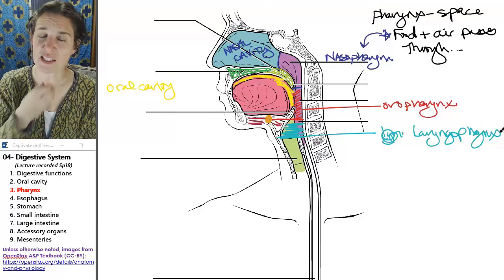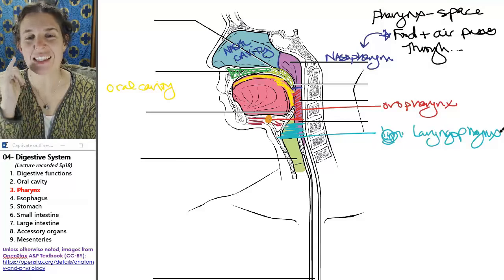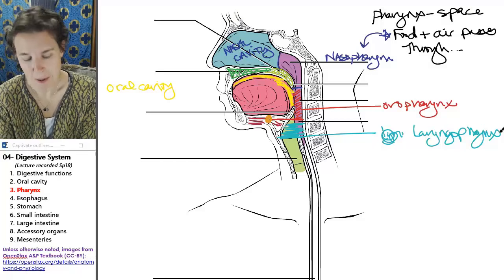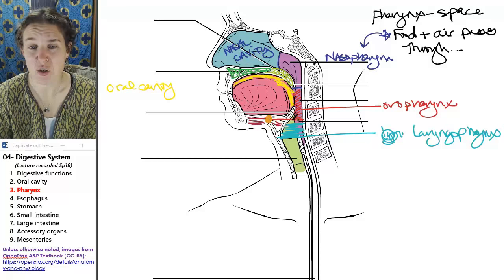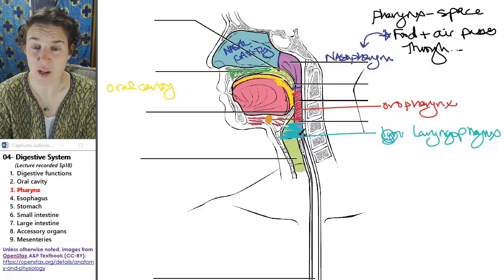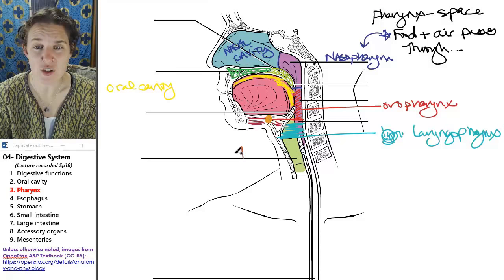And the laryngopharynx is that shared space. It's the last shared space. And then look what happens. Because you share space for food and water, this is the trachea.